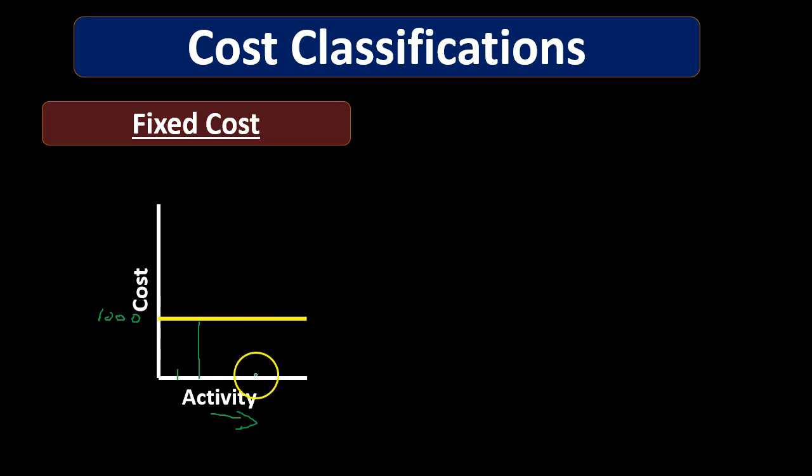If we keep producing in that warehouse and maximize production — say five thousand things — it's still going to cost us a thousand dollars no matter what; the rent is going to be the same. So when making projections we can think about how many units we have to produce in order to pay off the rent, to pay off the fixed cost.